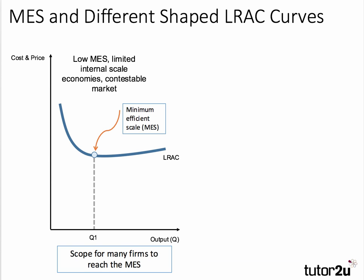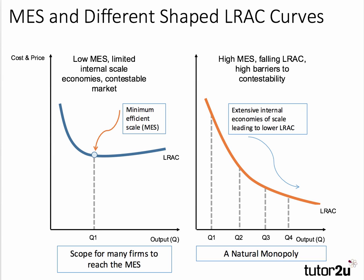The contrast is with a natural monopoly, where the average cost of production continues to fall pretty much across the range of output. As we move from Q1 through to Q4, you can see the unit cost carries on falling. In that situation the minimum efficient scale is at an extremely high level of output relative to demand — indeed there may only be room for one firm to fully exploit those scale economies. And hence this is the essence of the diagram one would draw when talking about a natural monopoly.